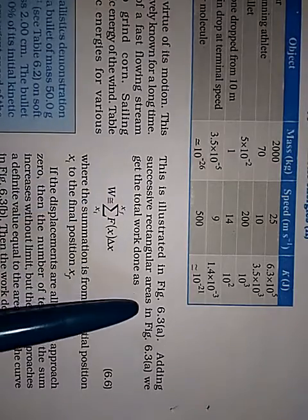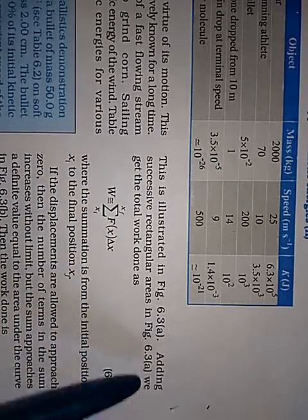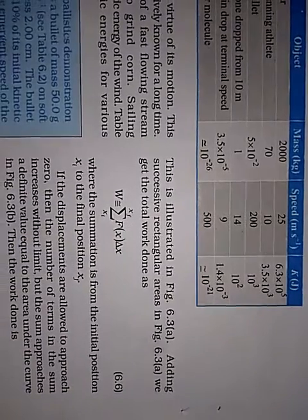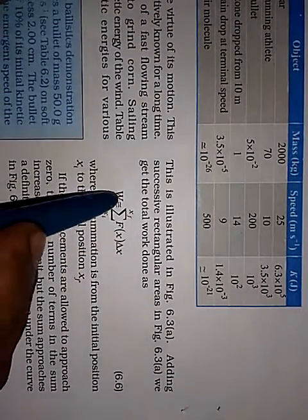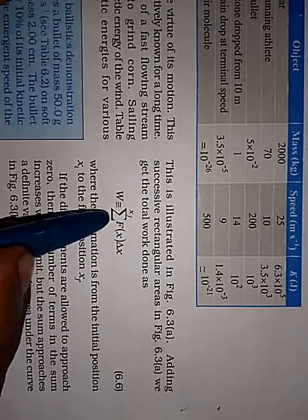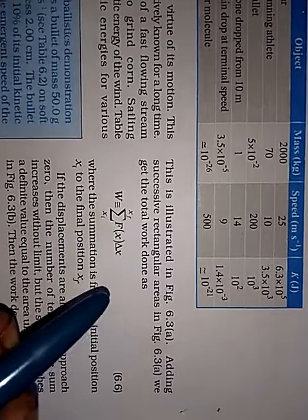Adding successive rectangular areas in figure 6.3a, we get the total work done. So first work done. So we can write it as work done is approximately equal to x i to x f. This is the initial value. This is final value. f of x into del x.